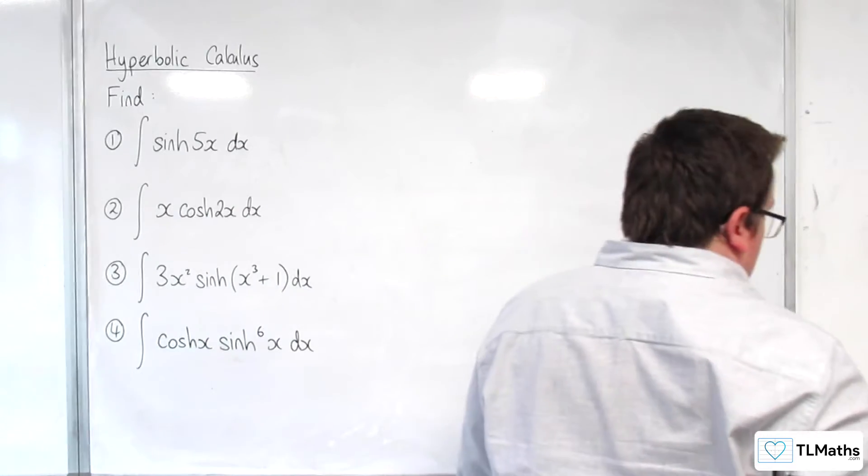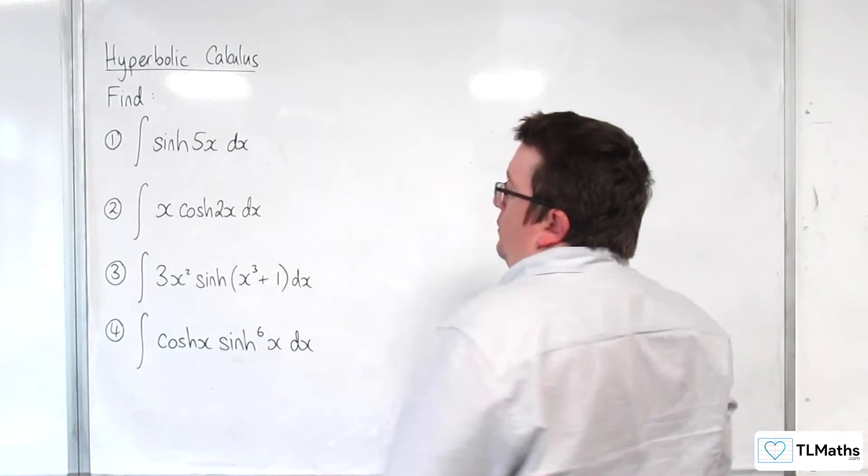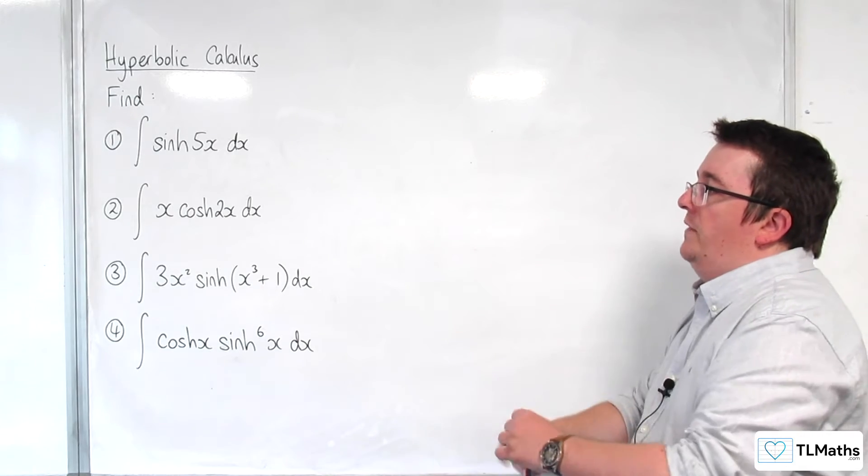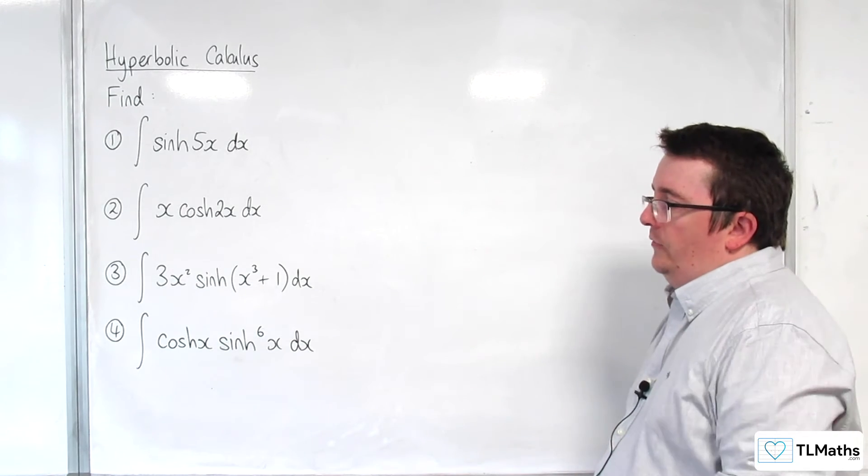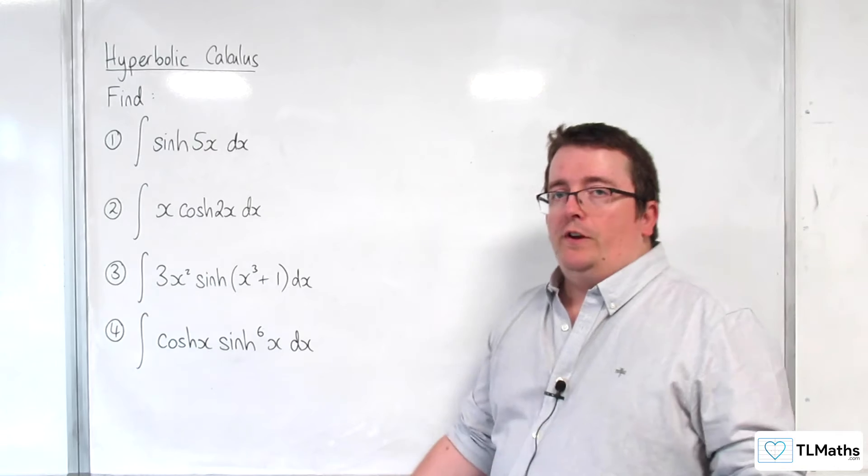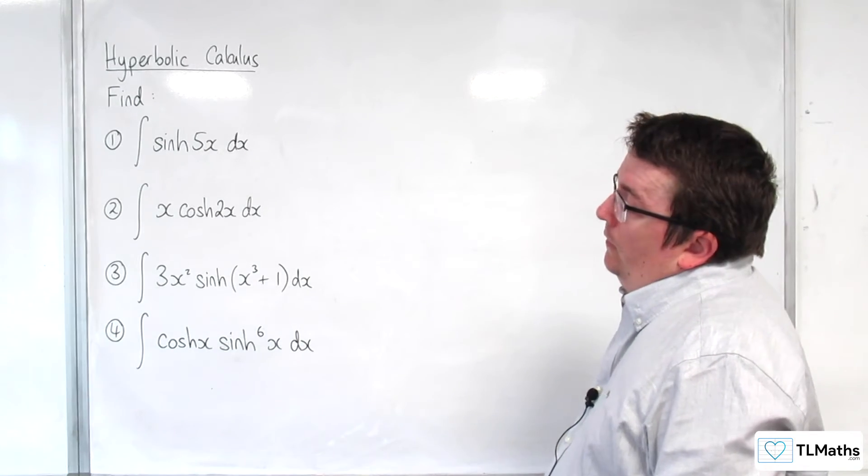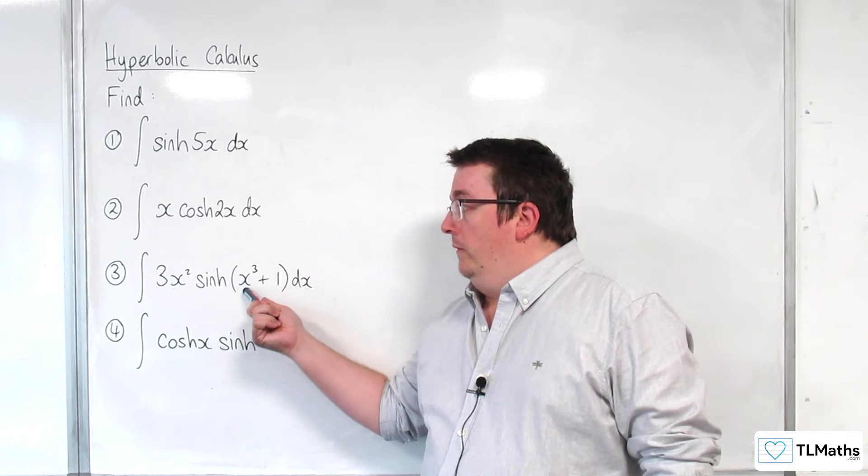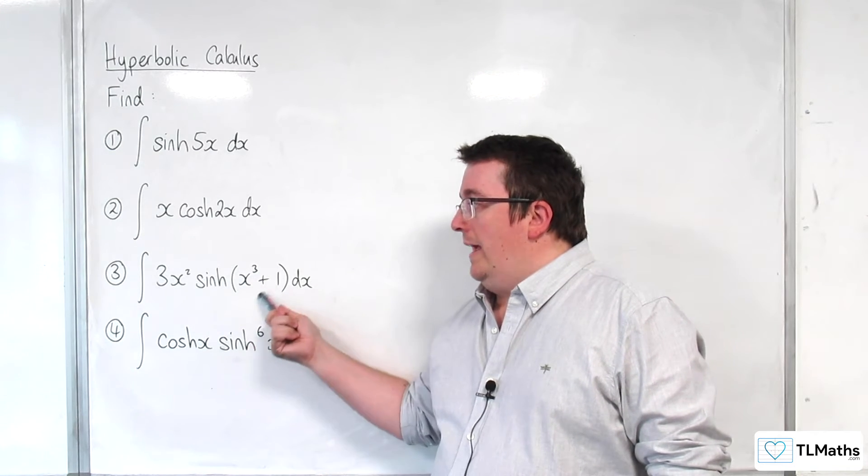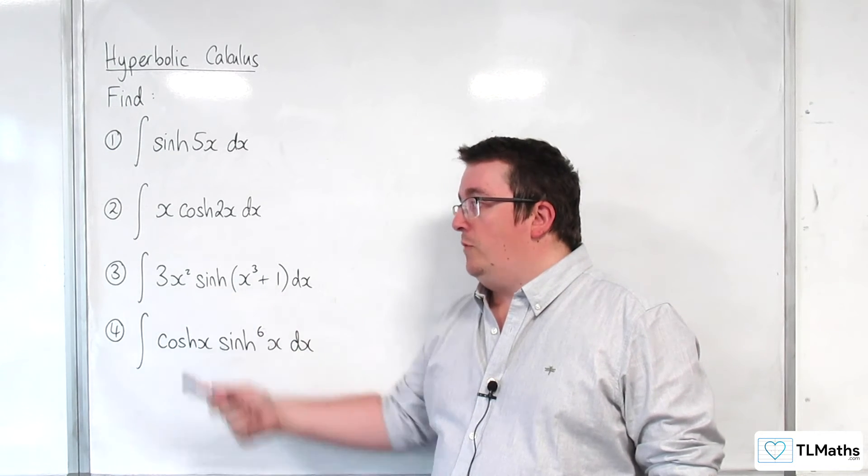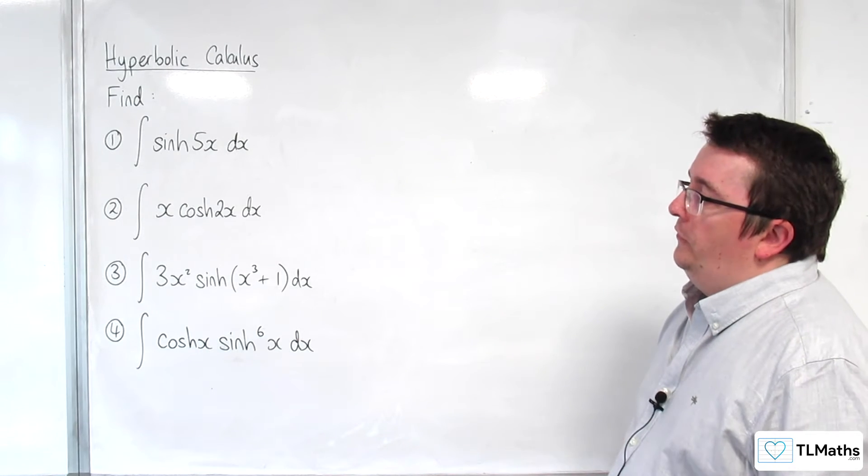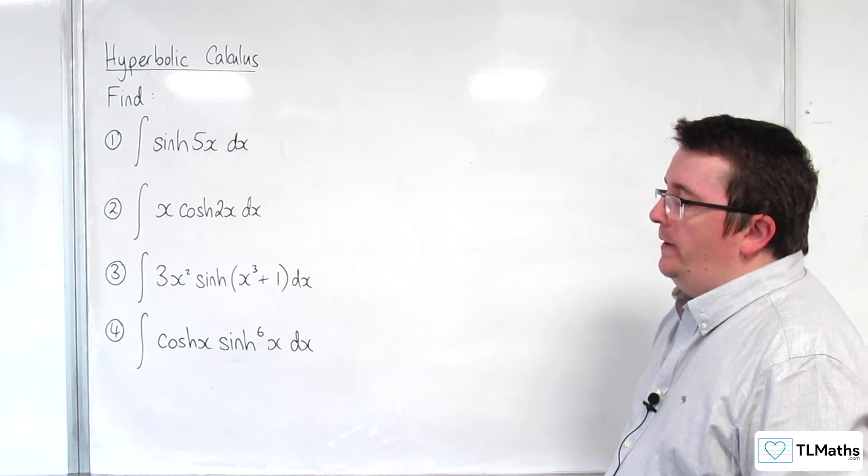Now, number 3, we have the integral of 3x squared sinh of x cubed plus 1 dx. Now, you could reverse the chain rule on this. Because the interior function, x cubed plus 1, differentiates to 3x squared, that means it's quite nice to reverse the chain rule on it.